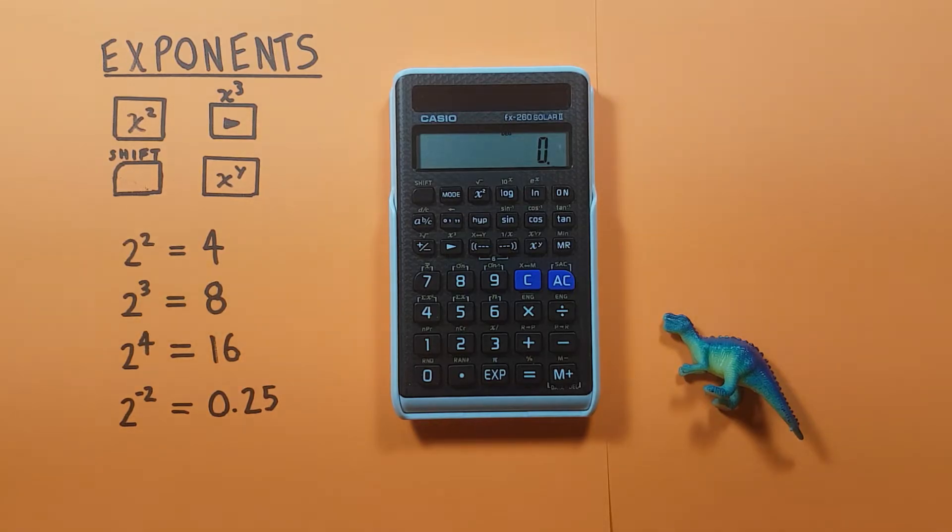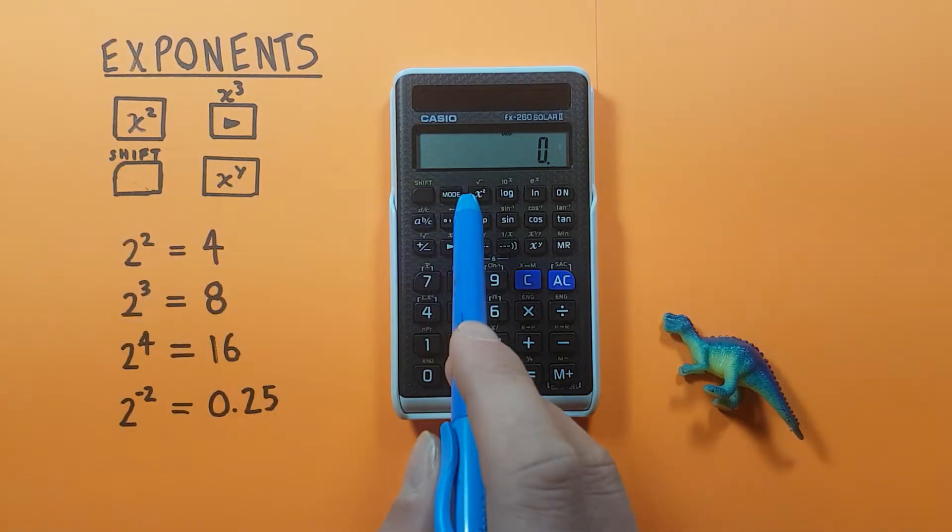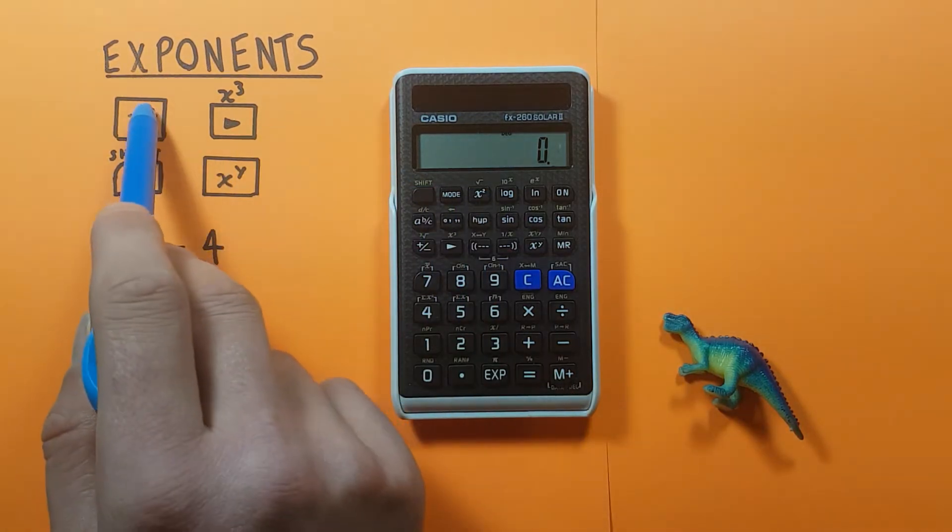Alright, to do this we'll be using the x squared key located here, that looks like this.